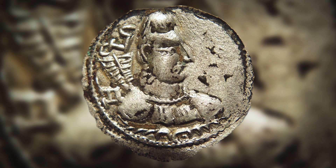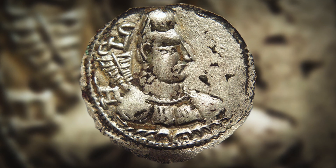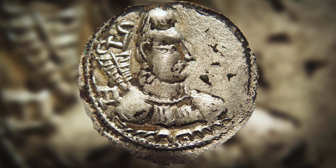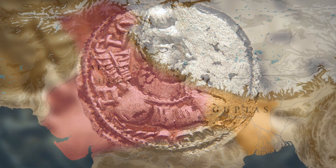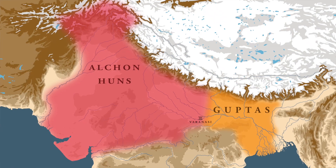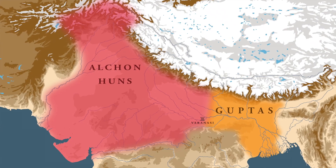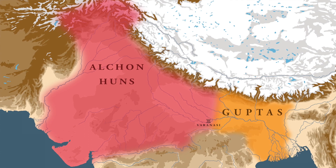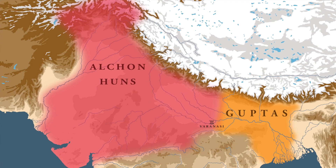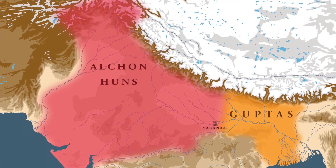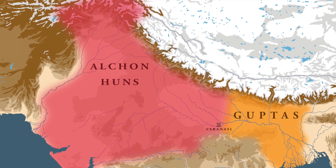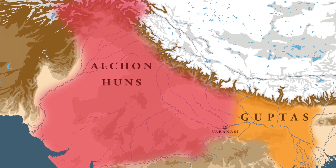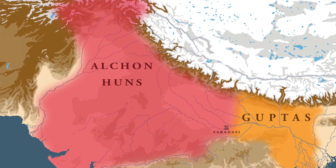Tormaana, the leader of the Alkan Huns, for the first time conquered a large chunk of northern India at the start of the 6th century AD. But these conquests of the Huns would not last long.